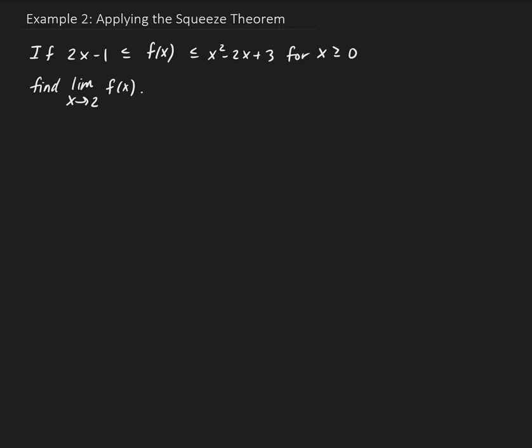In this example, we want to find the limit of f of x as x approaches 2. So we're given that the function is bounded by 2x minus 1 and x squared minus 2x plus 3.